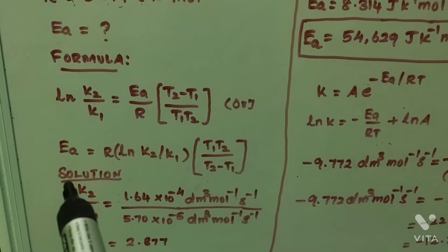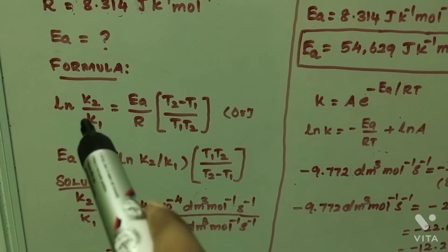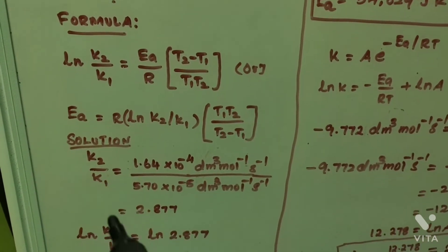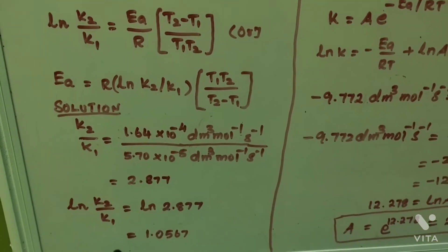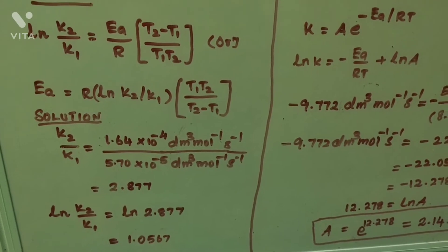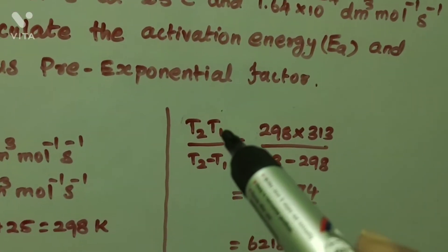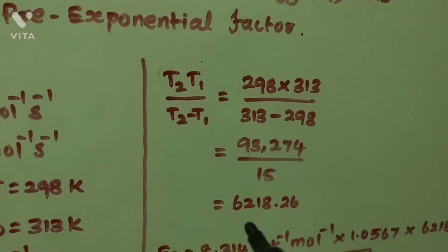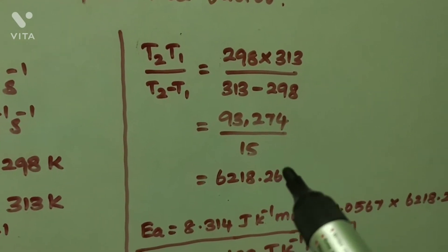For the solution, first I calculate ln(K2/K1), which equals 1.057567. Second, I calculate (T1 × T2)/(T2 − T1), which equals 6218.26.